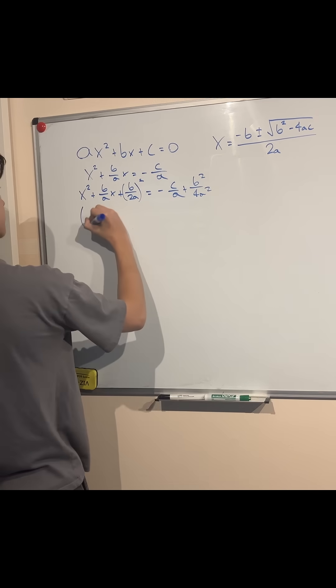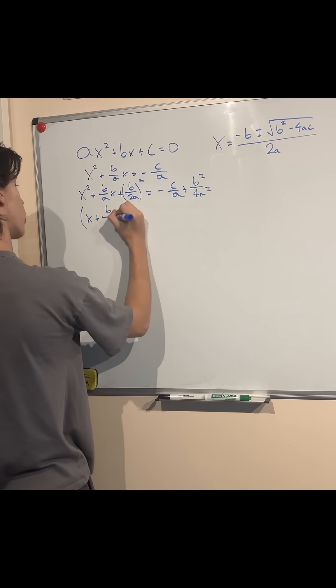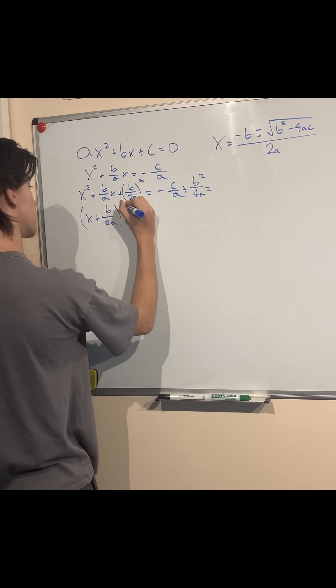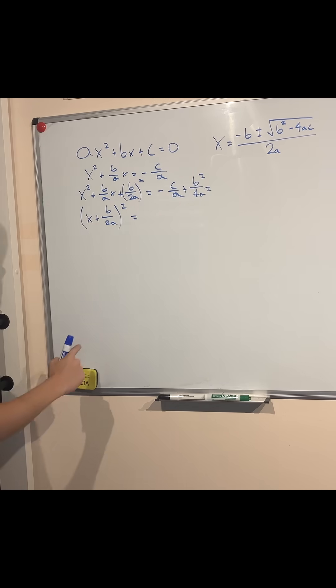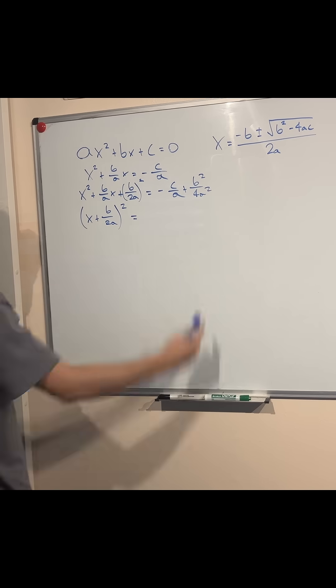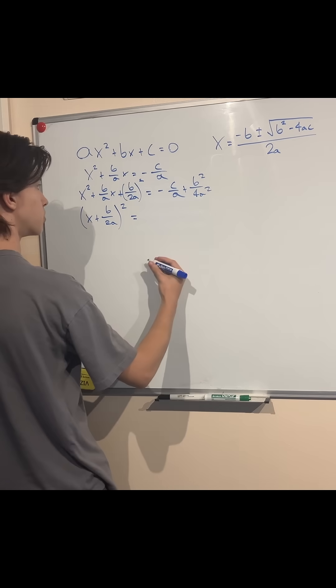Now I can factor this to get (x + b/2a)². And from there, we are able to take the square root of both sides once we have simplified the right hand side. So let's quickly do that.